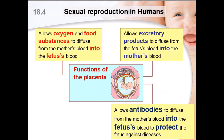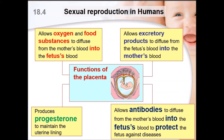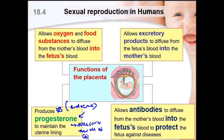The placenta also allows diffusion of antibodies from the mother's blood to the fetus blood, serving as a natural immune defense against diseases. Additionally, the placenta has an endocrine function — it continues to secrete progesterone. It takes over the role of the corpus luteum: once the placenta is fully functional, the corpus luteum in the ovary disintegrates, and the placenta carries out the secretion of progesterone.